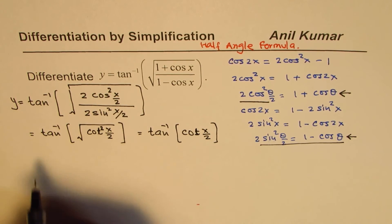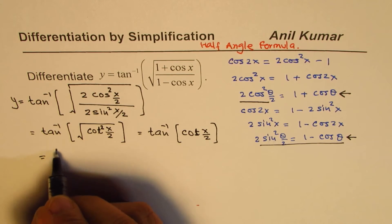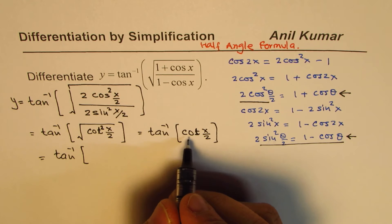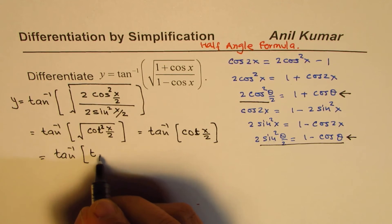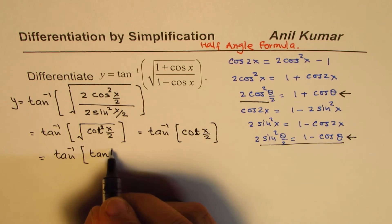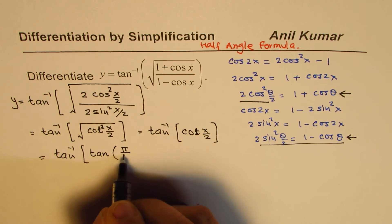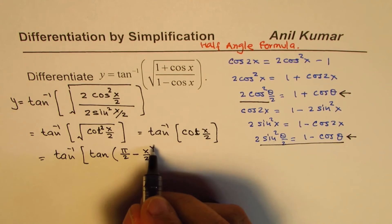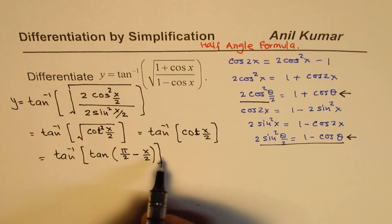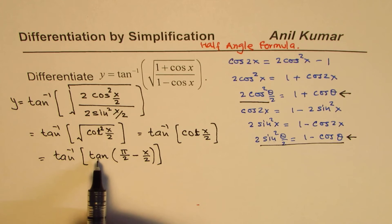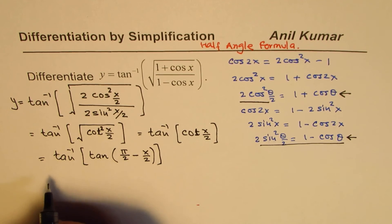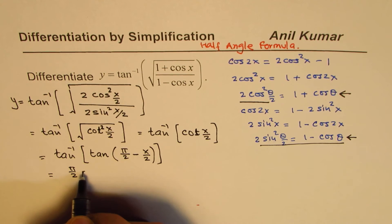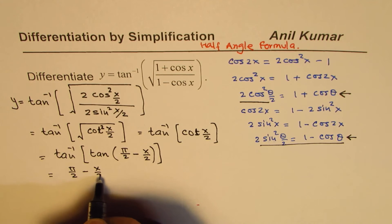Using the co-function identity, cot(x/2) can be written as tan(π/2 minus x/2). So we now have tan inverse of tan(π/2 minus x/2), which simply gives us the angle π/2 minus x/2.